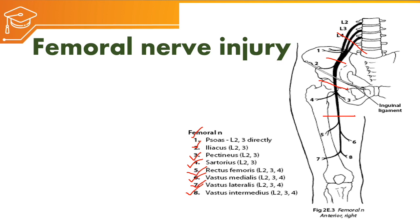If the injury is above the iliac crest, then hip flexion as well as knee extension will be lost — the range of motion of hip flexion and knee extension will be reduced. If the injury is below the hip joint, then only the quadriceps will be weak; therefore hip flexion won't be reduced whereas knee extension will be reduced.